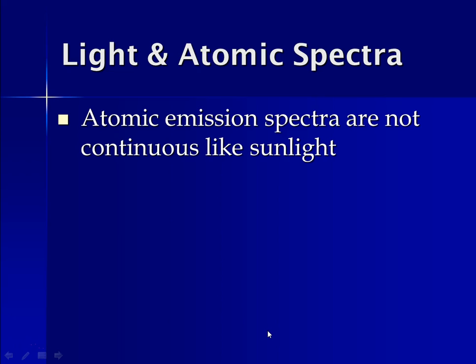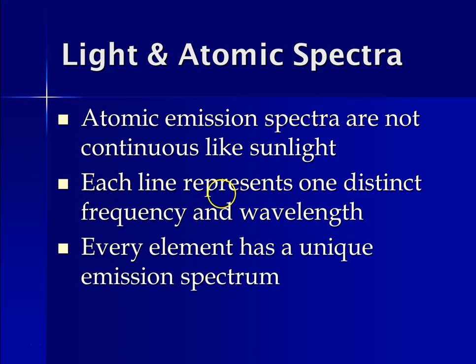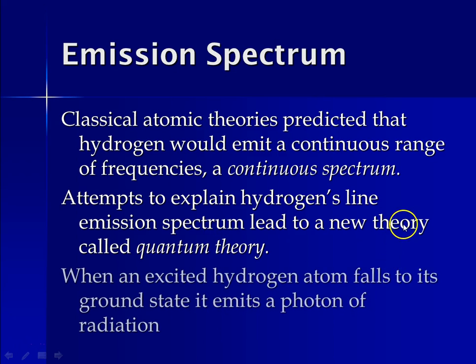When talking about light and atomic spectra, atomic emission spectra are not continuous like sunlight. Each line in the atomic emission spectrum represents a distinct frequency and wavelength associated with how much energy was absorbed by an electron when it jumped to a different energy level. Every element has a unique emission spectrum. Classical atomic theories predicted a continuous spectrum for hydrogen, and attempts to explain the actual discrete spectrum led to quantum theory.